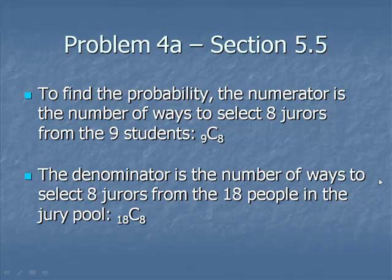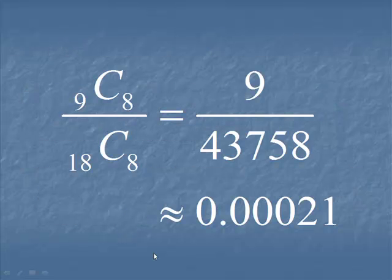The denominator for the probability will be the number of ways that we can select 8 jurors from 18 people. The 9 students and the 9 faculty combined together give us a jury pool of 18 people. So rather than 9C8 from the first part, now we're looking at 18C8. So here's the calculation. Do each combination separately. 9C8 is equal to 9. 18C8 is equal to 43,758, giving us a probability of approximately .00021.